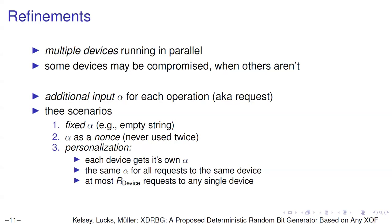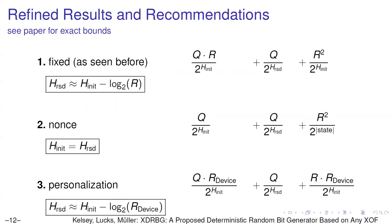A third strategy is personalization: every device gets a unique string alpha as a kind of name, which can also be chosen at random. All requests from the same device use the same alpha, but different devices use different alphas. With nonces, it is reasonable to choose h_reseed equal to h_init; with personalization, h_reseed can again be smaller than h_init, but now the difference is log_2 of the maximum number of requests from a single device rather than from all devices combined.